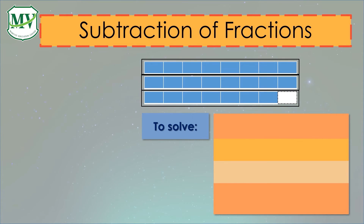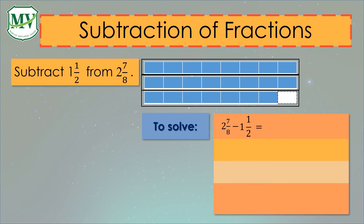Let's have another example for subtraction of fractions. Subtract 1 and 1 over 2 from 2 and 7 over 8. We need to express mixed numbers into improper fractions. For 2 and 7 over 8: 8 times 2 plus 7 equals 23 over 8. For 1 and 1 over 2: 2 times 1 plus 1 equals 3 over 2. So the new subtraction sentence will be 23 over 8 minus 3 over 2.